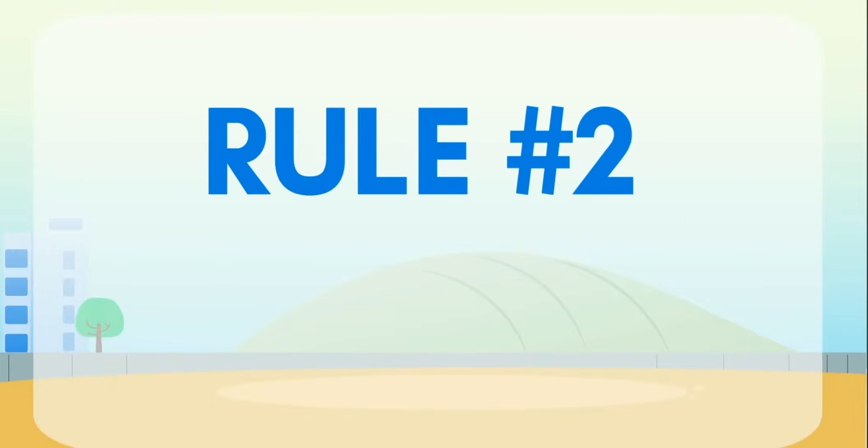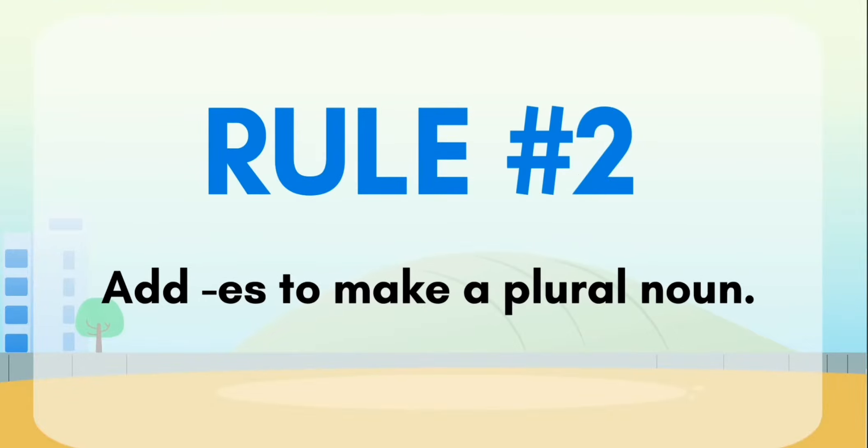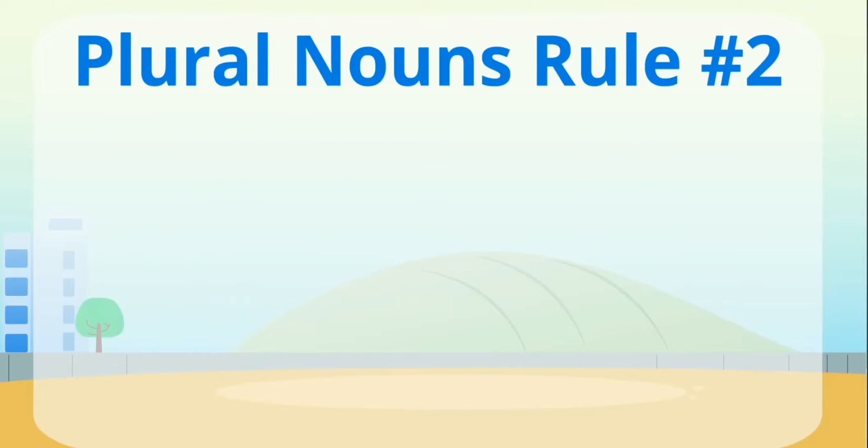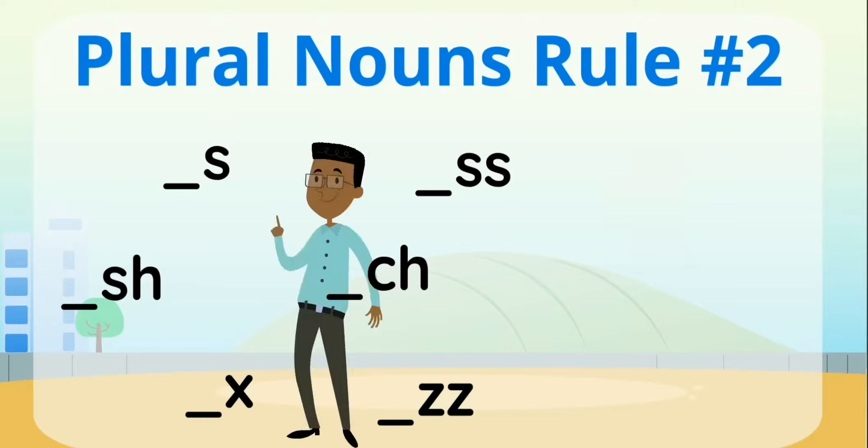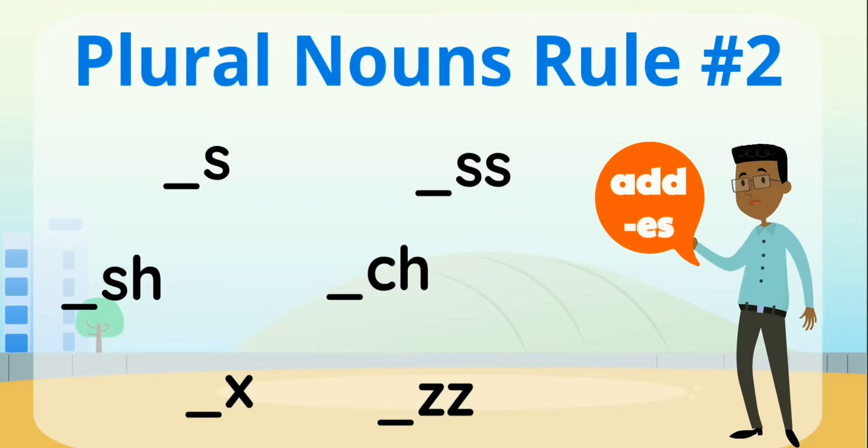Rule number two: Add es at the end to make a plural noun. Singular nouns that end in s, ss, sh, ch, x, or z need an es at the end to become plural. Just think of this weird hissing sound.